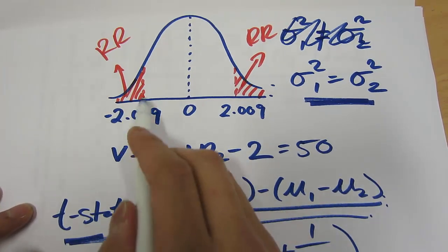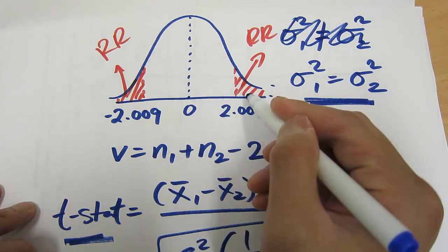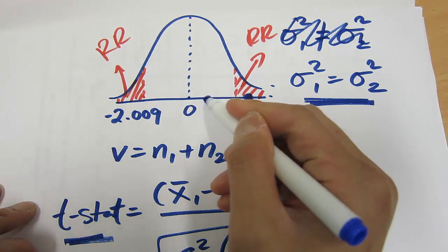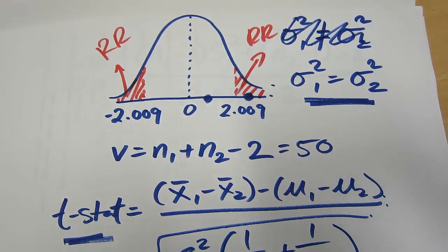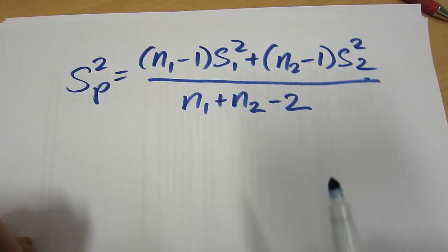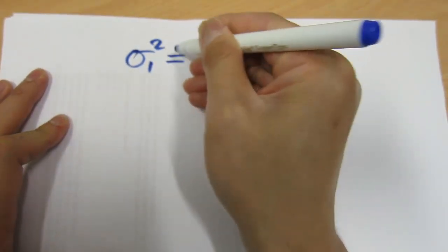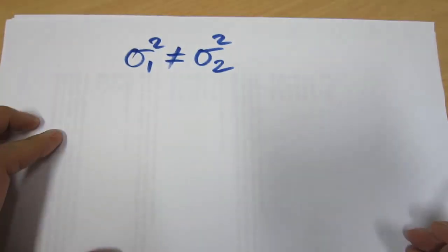Once you have your t-stat, you simply check whether it lies in your rejection region. If it does, you reject your null hypothesis. If it lies outside your rejection region, you do not reject your null hypothesis. Now let's see how this would be different if our population variances were not equal.